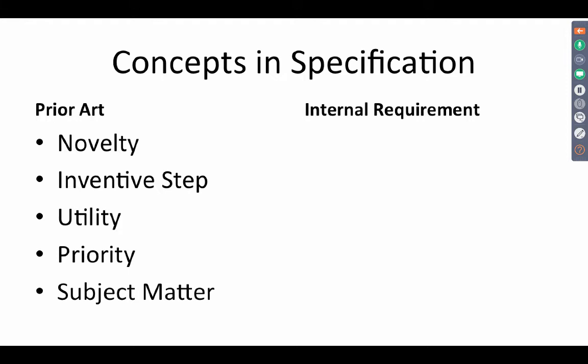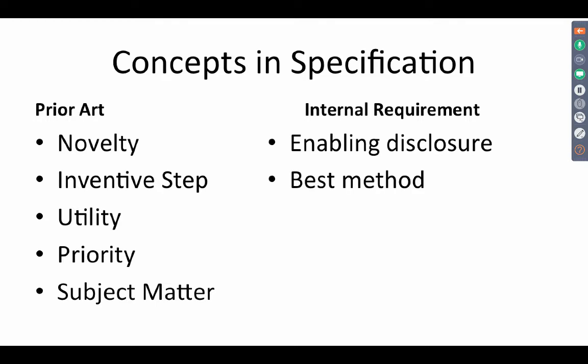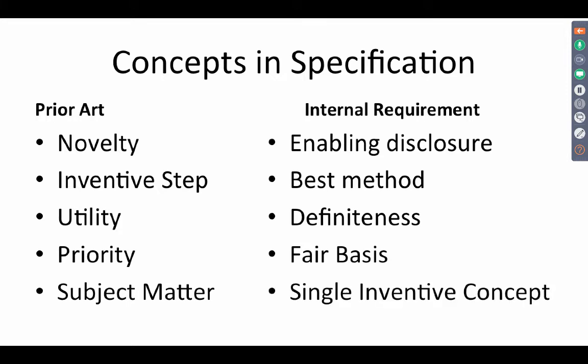They are not directly dependent — they have a relation to the prior art. Apart from these concepts, you have certain internal requirements. Enabling disclosure is an internal requirement: the disclosure you make should enable a person skilled in the art to work the invention. Best method — you should disclose the best method, again an internal requirement. The claims have to be definite, clear, and succinct. The claims have to be fairly based on the matter disclosed. And the invention should deal with a single invention or relate to a single inventive concept.